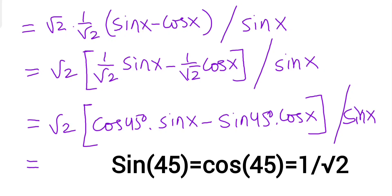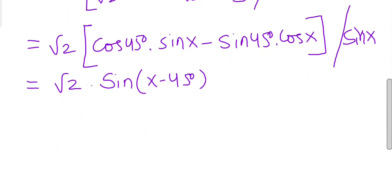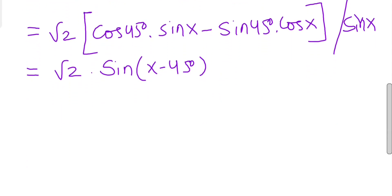Now we can replace this expression using the sine subtraction formula: sin A·cos B - cos A·sin B = sin(A - B). So this becomes √2·sin(x - 45°), all divided by sin x.